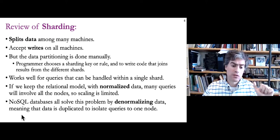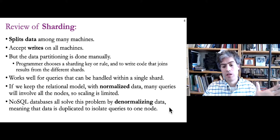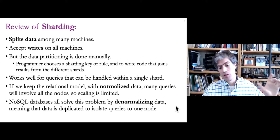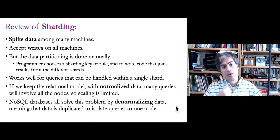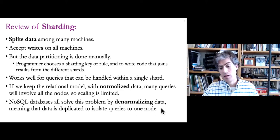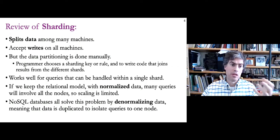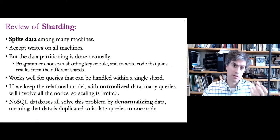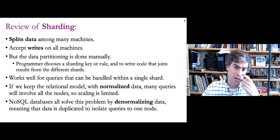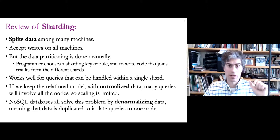What NoSQL databases do is denormalize the data to solve that problem. In other words, they avoid having references and instead, in many cases, duplicate data. This allows you to have a copy of all the data you need in one place to fulfill a request by contacting just one or a small number of nodes, rather than fetching data from wherever it originally exists.